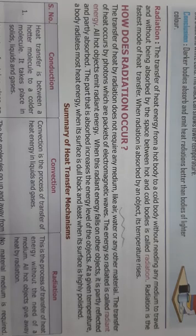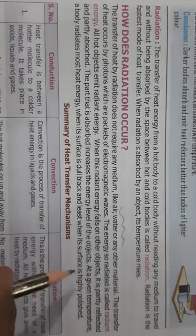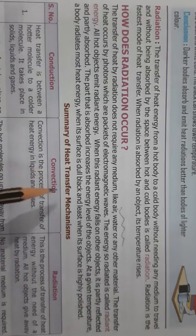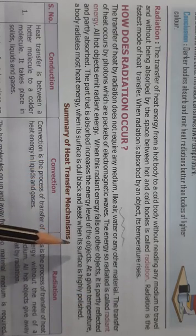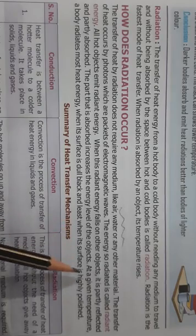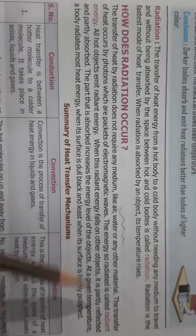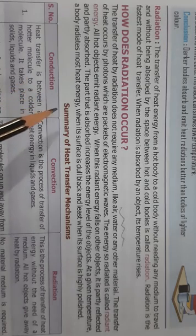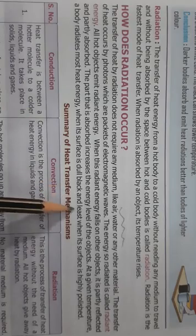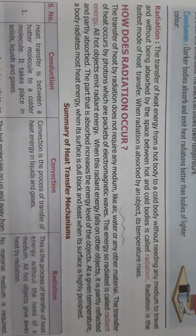The energy which is carried through waves is called radiant energy, and all hot objects emit radiant energy. Whenever energy falls on any other body, it is partly reflected and partly absorbed. At a given temperature, a body radiates most heat energy when its surface is dull black, and least when its surface is highly polished.